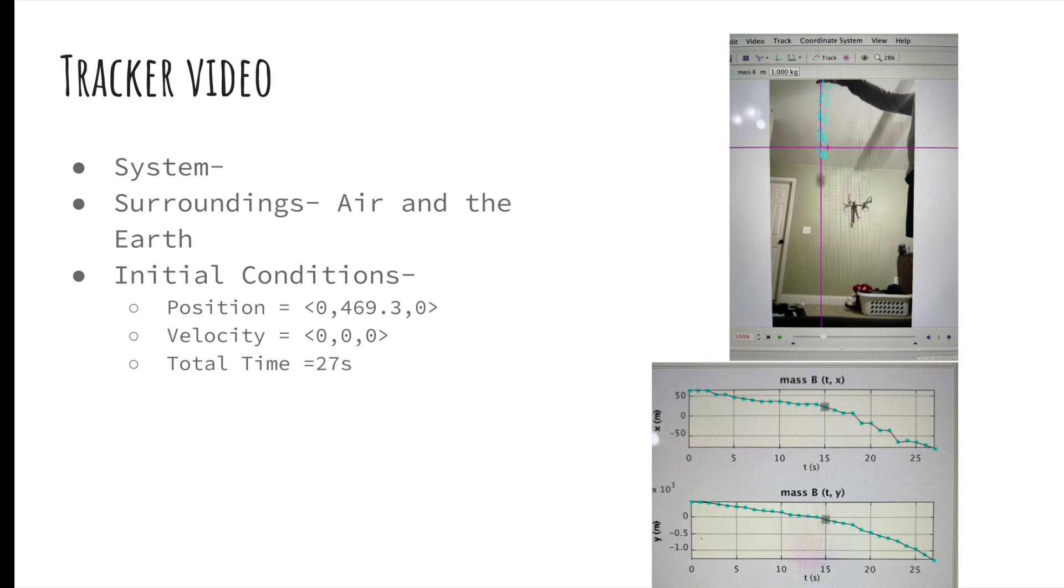As you can see, the y-position graph is exponentially moving in the negative direction due to the acceleration of gravity on the object.